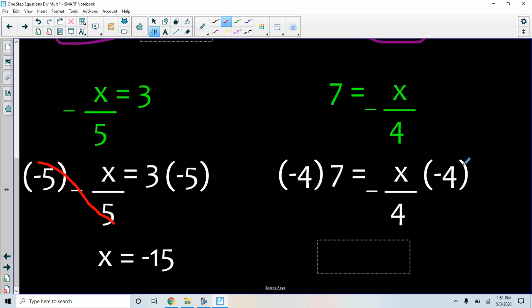Parentheses means multiplication. These are the parentheses. Minus 4 divided by minus 4 is 1. So here I have 1x equals negative 4 times 7 is negative 28.